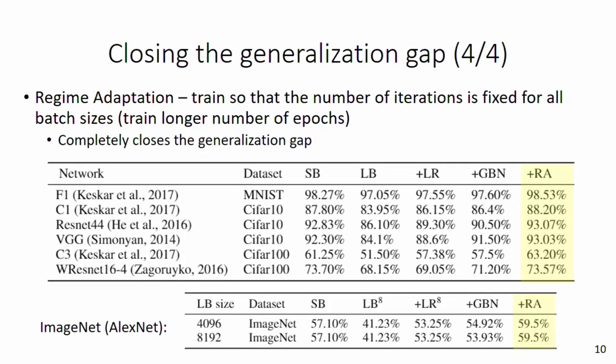We confirmed this finding for numerous datasets and models, finding a similar effect that when the number of iterations is fixed for all batch sizes, there is no apparent generalization gap. For example, we were able to train on ImageNet using the AlexNet architecture with a batch size 64 times larger, achieving better accuracy than the original small batch result.